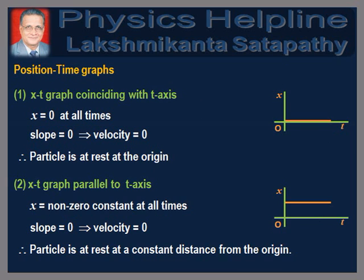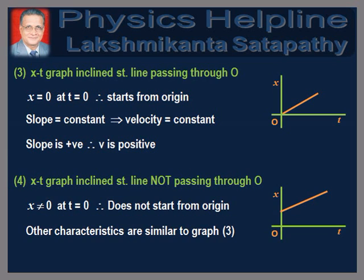Let us understand how information about the motion of a particle can be obtained from different graphs in kinematics. First, the position-time graph. When the position-time graph is a straight line coinciding with the time axis, the particle is permanently at rest at the origin. When it is a straight line parallel to the time axis, slope is zero, so velocity is zero and the particle is at rest at a constant distance from the origin. When the graph is an inclined straight line passing through the origin, the particle starts from the origin with a constant positive velocity. When it does not pass through the origin, the particle starts with a constant positive velocity but not from the origin.